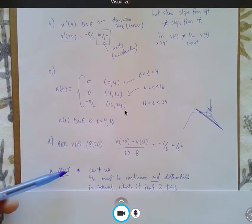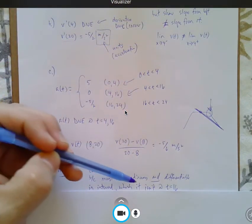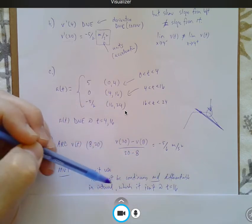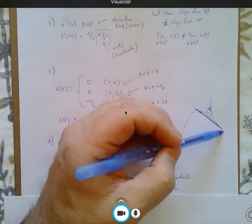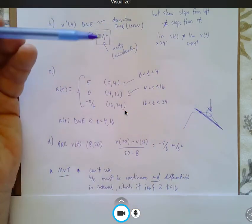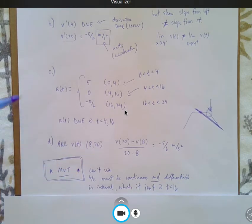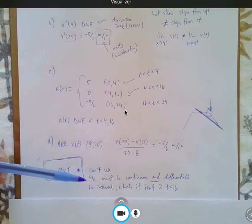And in the mean value theorem, the function has to be continuous and differentiable in the entire interval. So it's not at times 16, so I cannot use the mean value theorem. That's a good question. I think a lot of students probably forgot this when they were justifying it. It's just something to remember when you're talking about the mean value theorem.